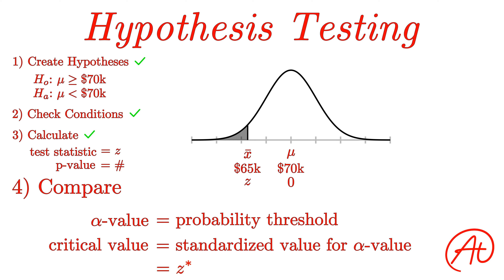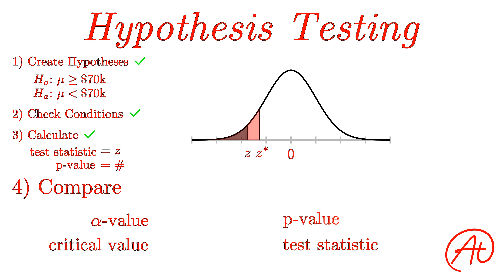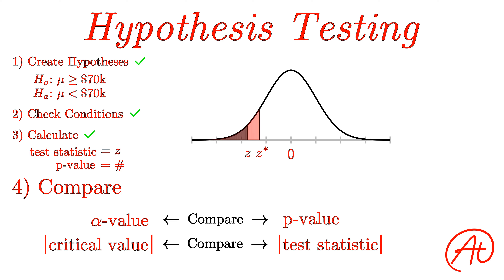For example, we'll call the critical value z-star. You can add this critical value and alpha value to your distribution drawing to help you compare them. Once you have your test statistic, p-value, critical value, and alpha value, you can now make your comparison. There are a couple of ways to do this: you can either compare the alpha value to the p-value, or compare the critical value to the test statistic. Either way will work. If you compare the test statistic and critical value, you should compare the absolute value of each, to account for the fact that these values can be negative. If you're comparing the p-value to your alpha value, you can just compare them as is, because probabilities are always positive.